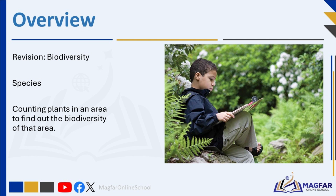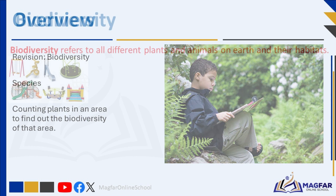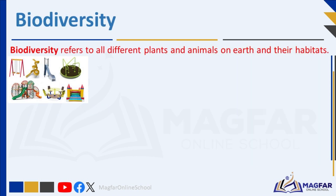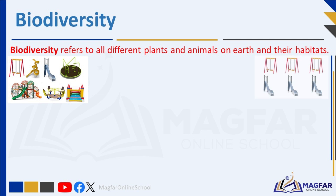Biodiversity refers to all the different plants and animals on earth and their habitats. High biodiversity is like having a playground packed with different activities — swings, slides, monkey bars, a sandbox, a basketball court, and even a little garden. Lots of kids can play different games and have fun. This is like a habitat with high biodiversity, where there are many different types of plants and animals. Now imagine the playground has only swings and slides — not very exciting.